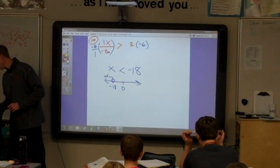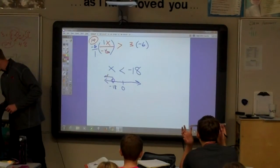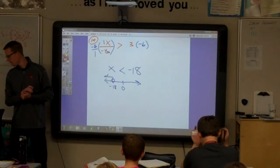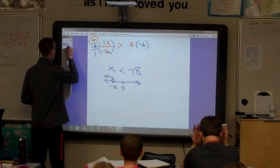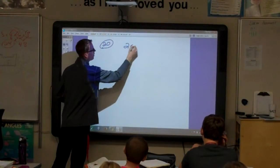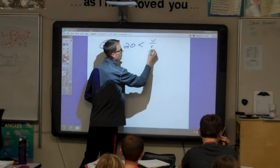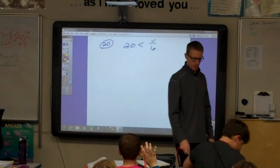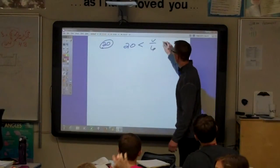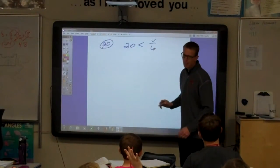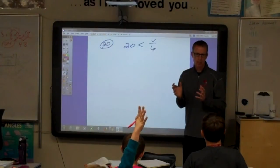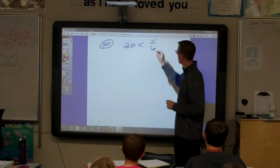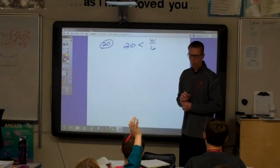How about one more of these? Let's go with Number 20. 20 is less than B over 6. What's the coefficient here? What is it? Well, not B. B cannot be part of the coefficient. 6. How many B's are there? 1. So, the coefficient is 1 sixth.